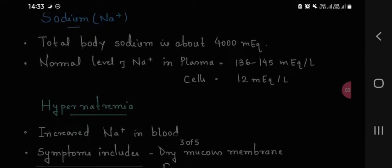Sodium. Total body sodium is about 4000 mEq. Normal level of sodium in plasma is 136 to 145 mEq per liter. And in cells, it is 12 mEq per liter.